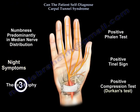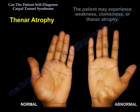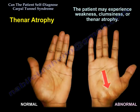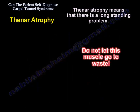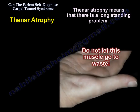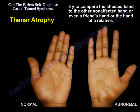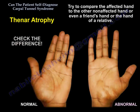Another clinical presentation is thenar atrophy. The patient may experience weakness, clumsiness, or thenar atrophy. When you see thenar atrophy, it means it is a long-standing problem — don't let this muscle go to waste. Try to compare the affected hand to the other hand which is not affected, or compare it to the hand of a friend or a relative, and check the difference.